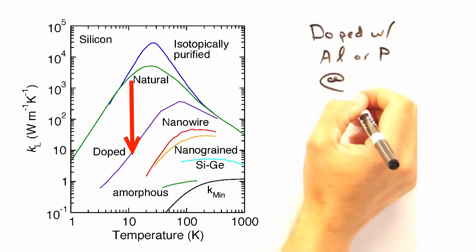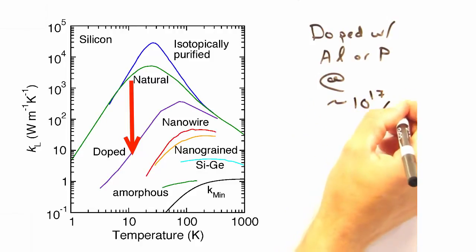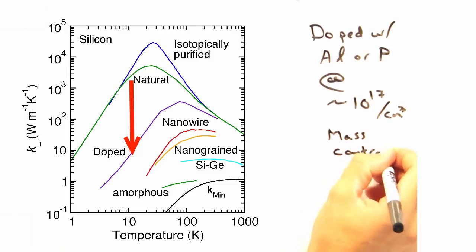Now instead of having isotopic impurities, as we have in natural silicon, let's say we take silicon and dope it with aluminum or phosphorus. What then happens to our thermal conductivity? It should drop. Because impurities are impurities, no matter what they are, and more scattering sources would decrease our net L, and thus kappa.